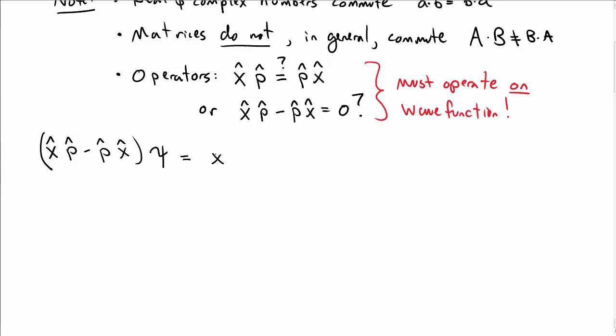Let's distribute that through. So it's x-hat p-hat psi minus p-hat x-hat psi. And then writing out the operators, x-hat p-hat is minus i h-bar d by dx, so that's d psi dx, minus minus i h-bar d by dx of x times psi.